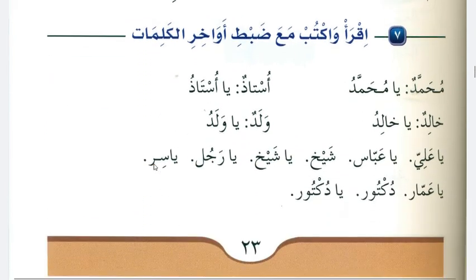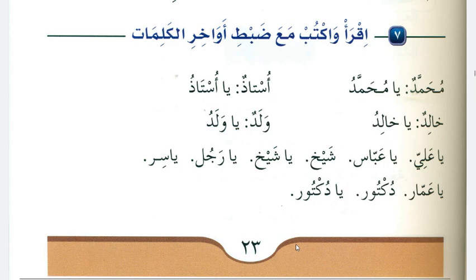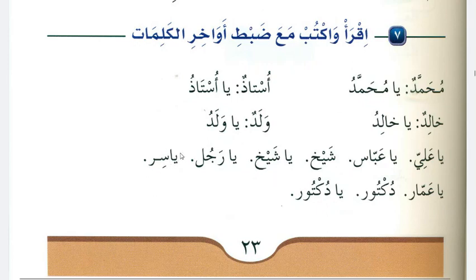اقرأ واكتب مع ضبط آخر الكلمات — Read and write with correct endings on the words. In Arabic, with every اسم (noun) we use tanween: محمدٌ، خالدٌ، أستاذٌ، ولدٌ. Here you will learn that when we call them using the particle يا — known as حرف النداء — we cannot use tanween, so we use dhamma instead: يا محمدُ، يا أستاذُ، يا خالدُ، يا ولدُ. Put the last vowel on each word: يا عليُّ، يا عباسُ. For يا ساير — there is no يا particle shown, so you say يا سرُ as it is a complete name.